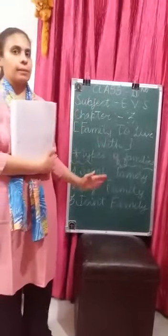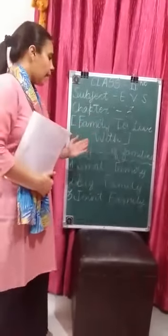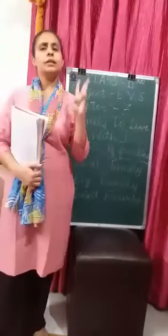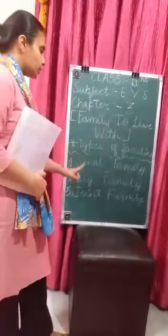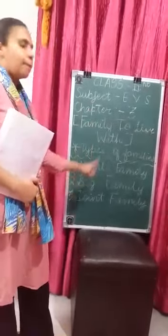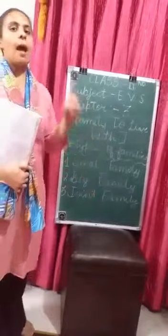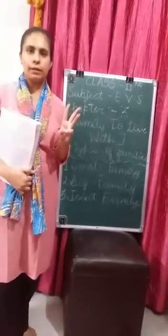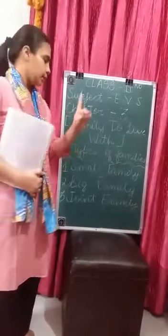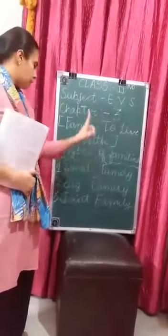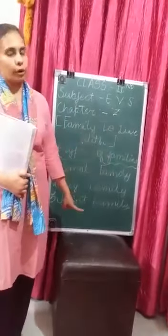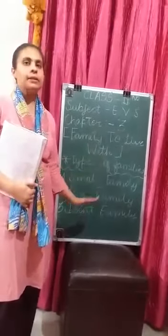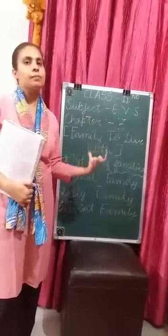Basically, we have three types of families. Three types of families are called small family, big family, and joint family. Now we will discuss all these three families in detail.